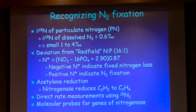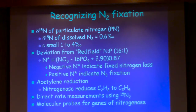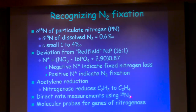We can use acetylene reduction — nitrogenase reduces acetylene to ethylene and you can measure how much ethylene is produced. There are direct measurements using 15N2, and there are also molecular probes for the genes of nitrogenase.